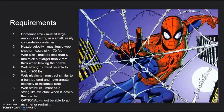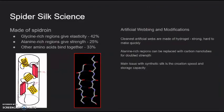Web strength - it must be able to hold 900 or more pounds. Web elasticity - it must act similar to a bungee cord and have a greater elasticity to thickness ratio. Web structure - it must be a string-like structure when it leaves the nozzle web shooter. An optional requirement is that it must be able to act as a net or a restraint.